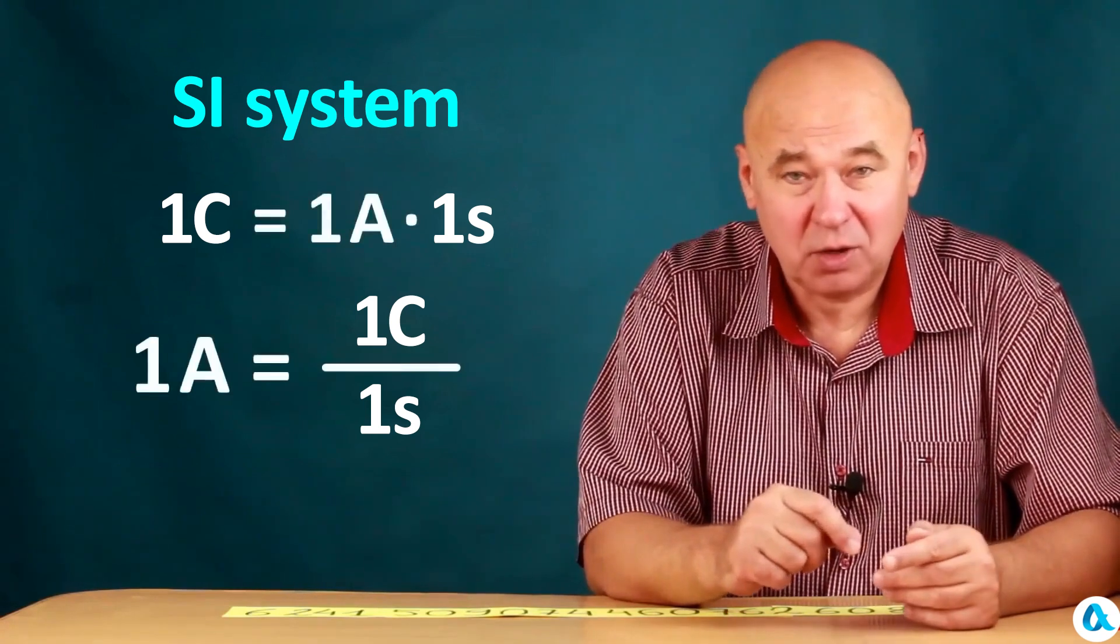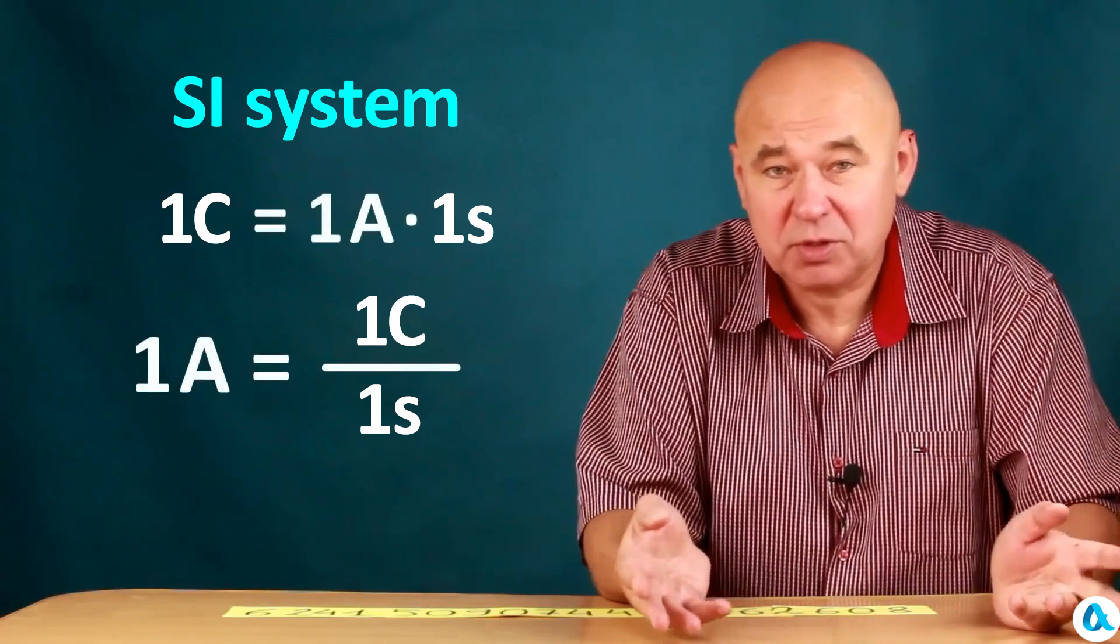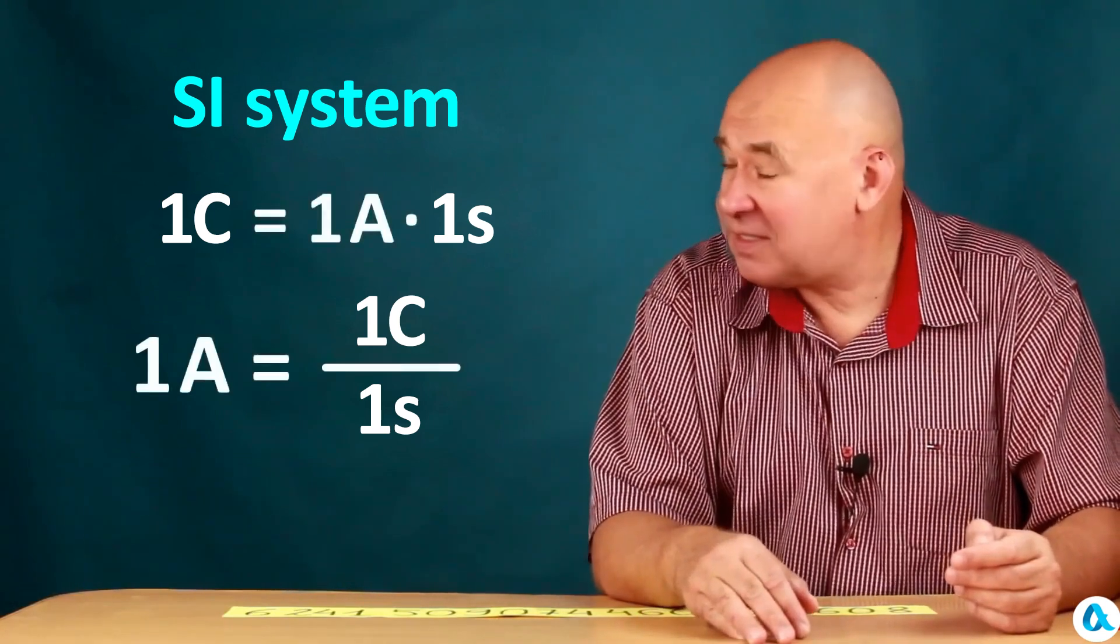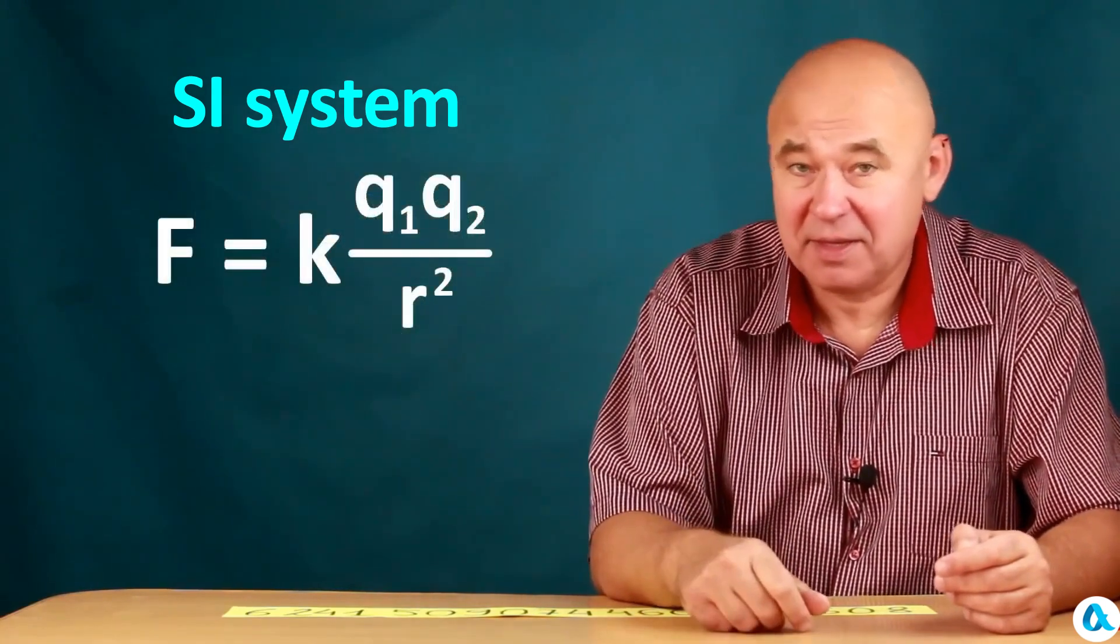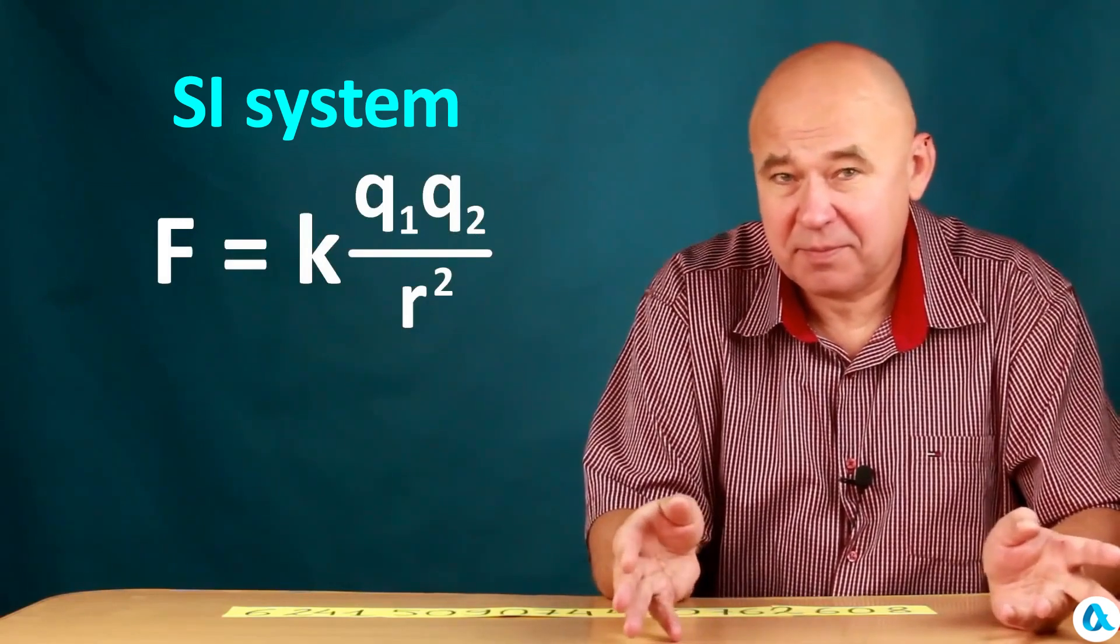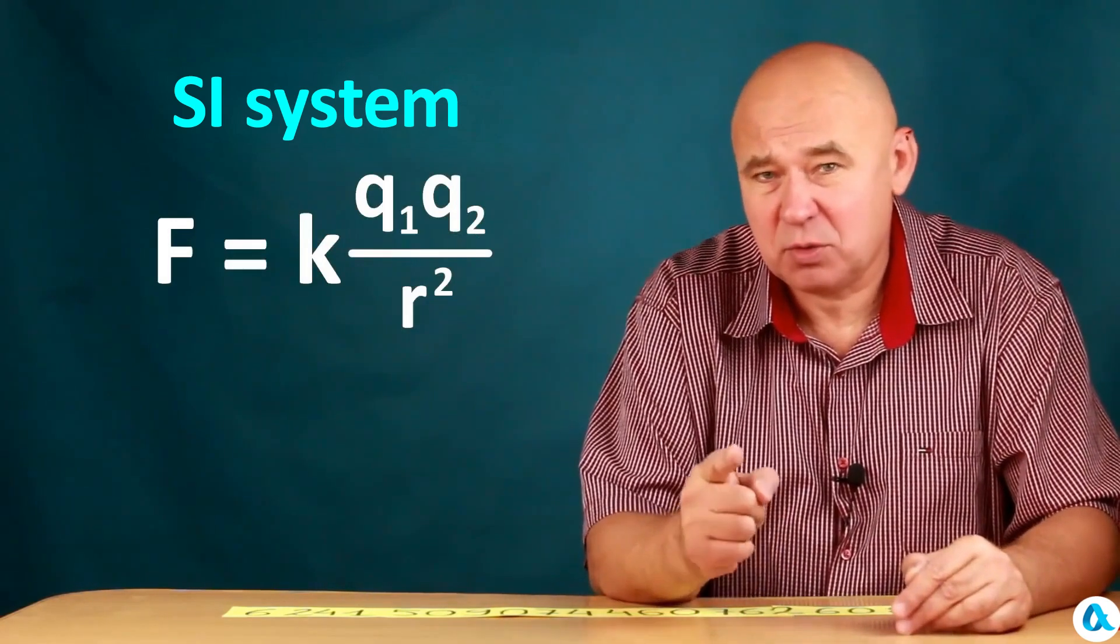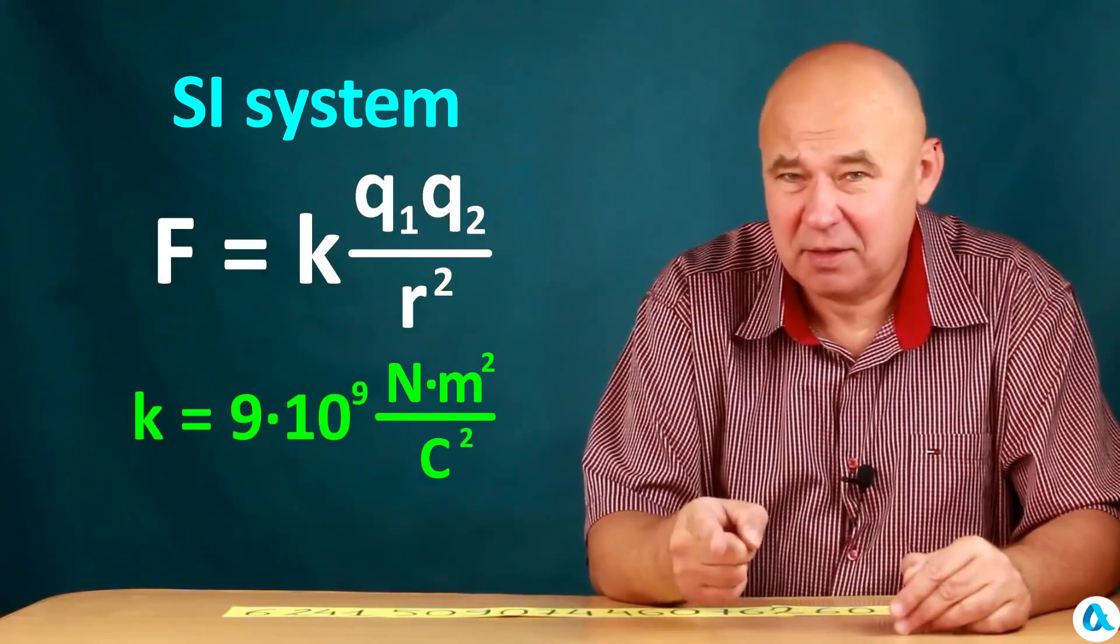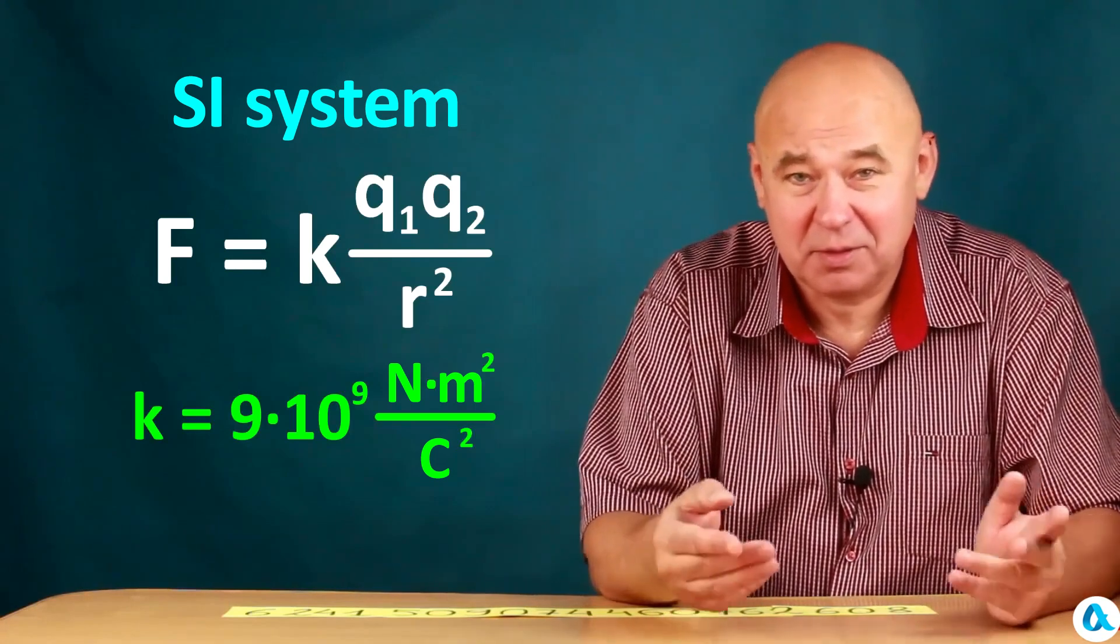Accordingly, we have our own unit of charge here. And therefore, Coulomb's law takes this form with the coefficient k. Since charges here are measured in coulombs, distance in meters, and force in newtons, the coefficient k is numerically approximately equal to 9 times 10 to the 9th newtons per square meter divided by square coulombs.